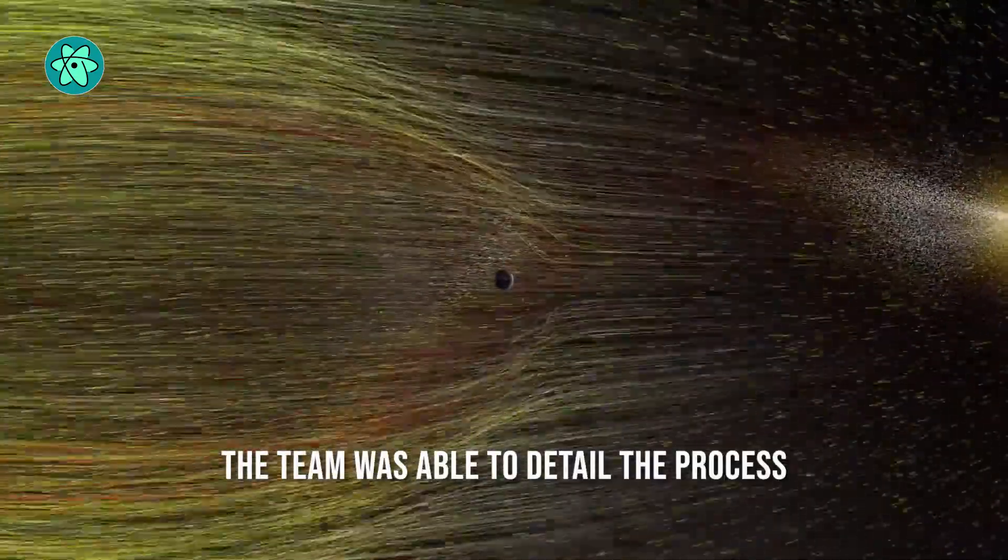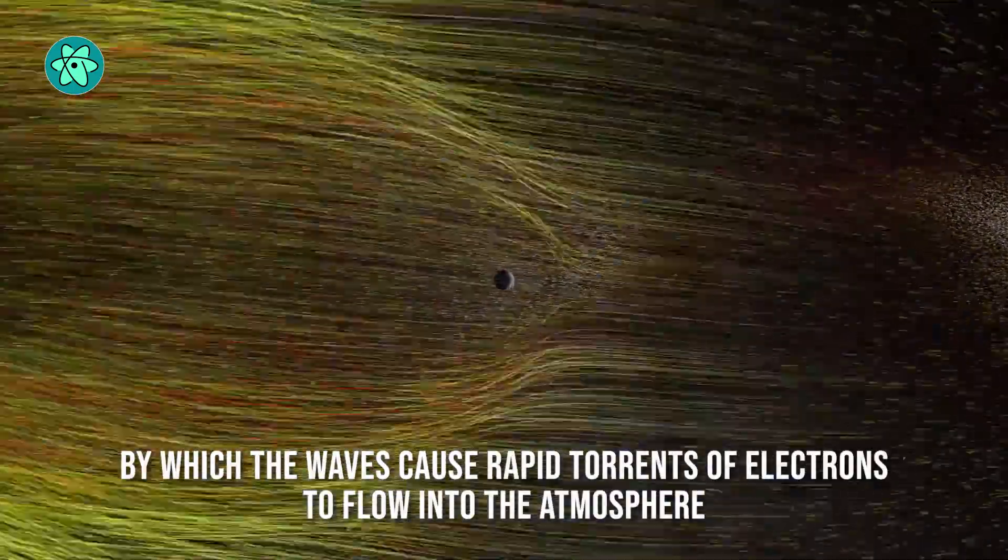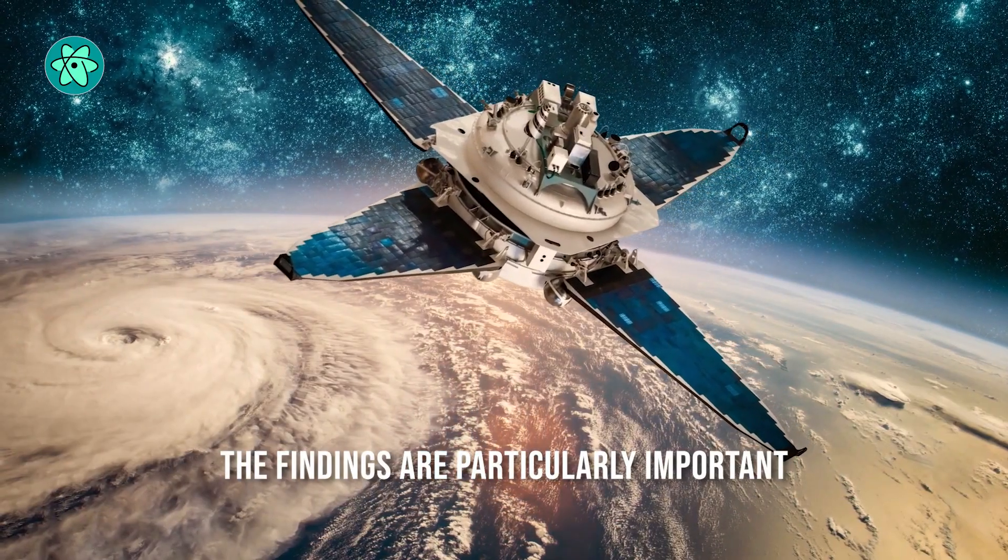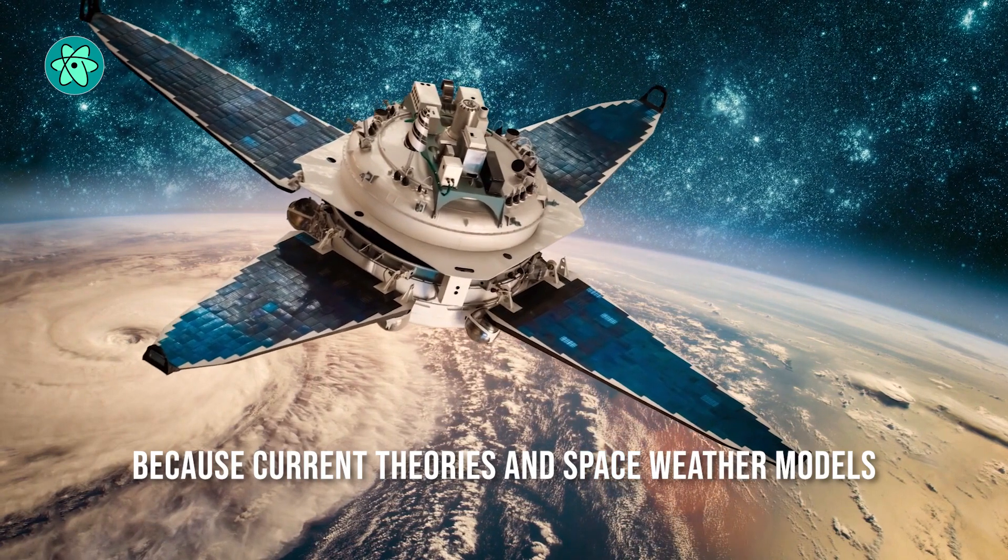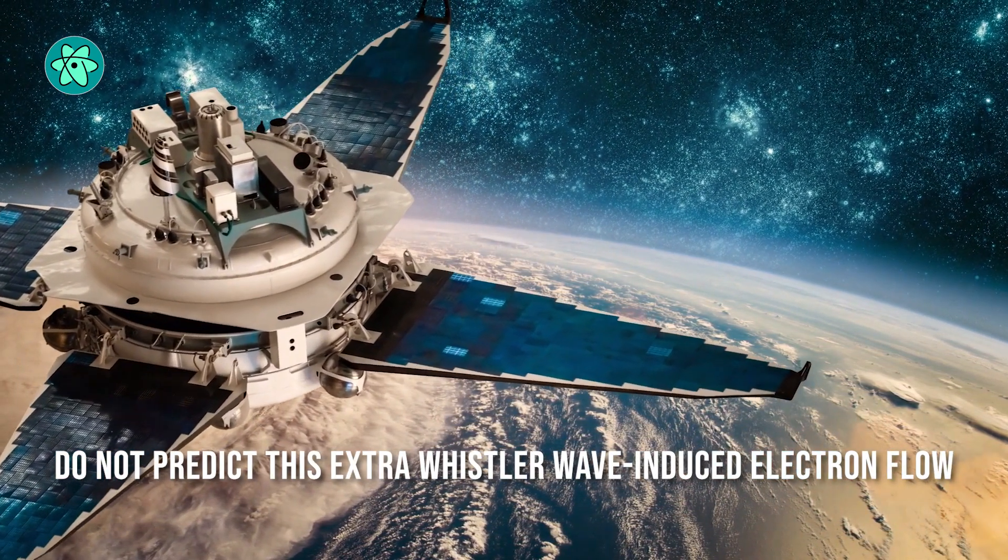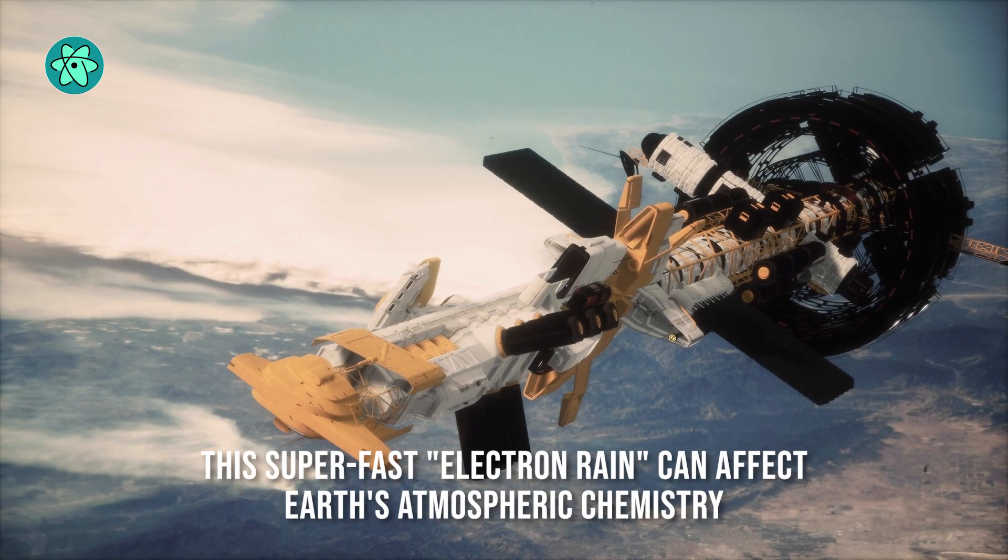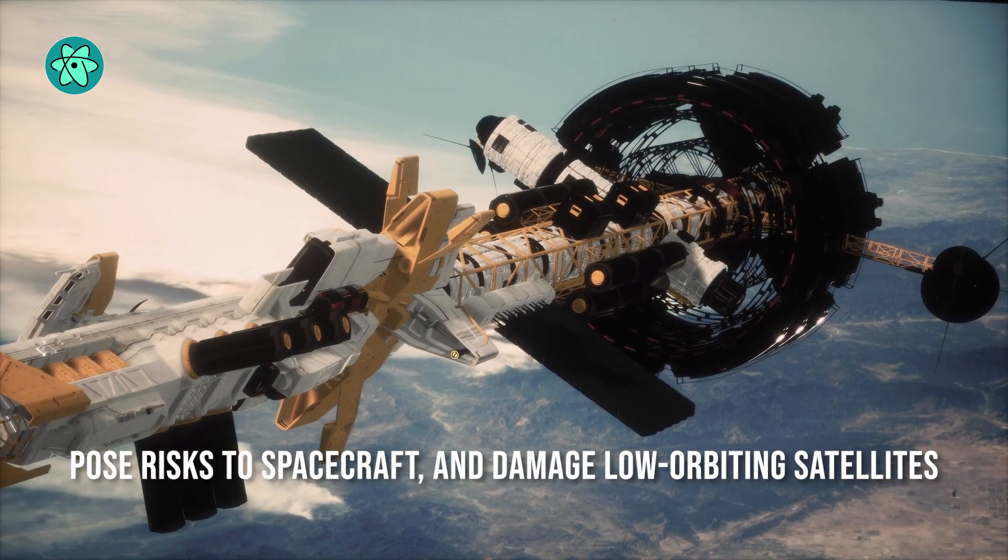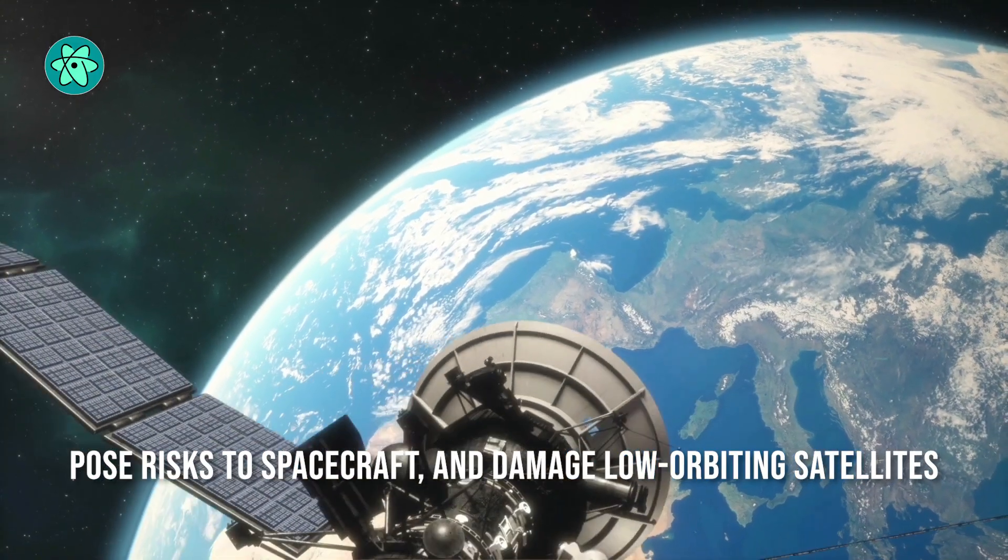The team was able to detail the process by which the waves cause rapid torrents of electrons to flow into the atmosphere. The findings are particularly important because current theories and space weather models do not predict this extra Whistler wave-induced electron flow. This superfast electron rain can affect Earth's atmospheric chemistry, pose risks to spacecraft, and damage low-orbiting satellites.